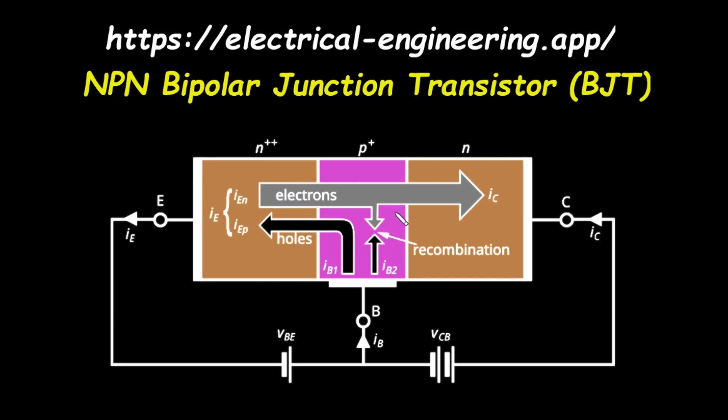In this video, we're going to take a detailed look at the inner workings of a bipolar junction transistor. We'll explore how charge carriers like electrons and holes move through the device, what each of the currents represents, and how this all comes together to achieve the transistor's primary function, amplification. We will break down every concept from the ground up, making it easy for beginners to follow along.